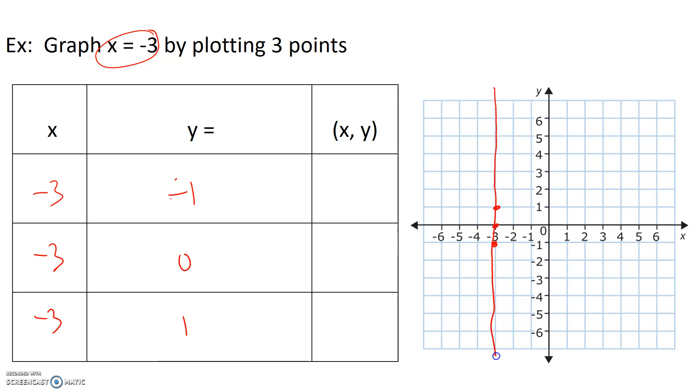So what we get is a vertical line. And this vertical line is a collection of all the points that have an x value of negative 3.